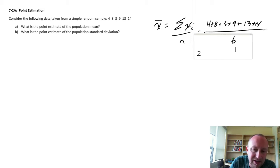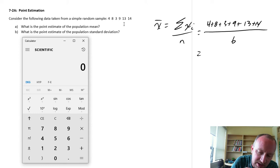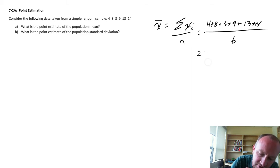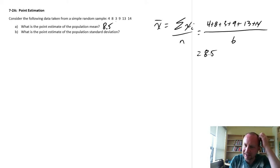So our point estimate of that population mean is 4 plus 8 plus 3 plus 9 plus 13 plus 14, 51 divided by 6, so 8.5. 8.5 would be my best guess, my best point estimate of the population mean.